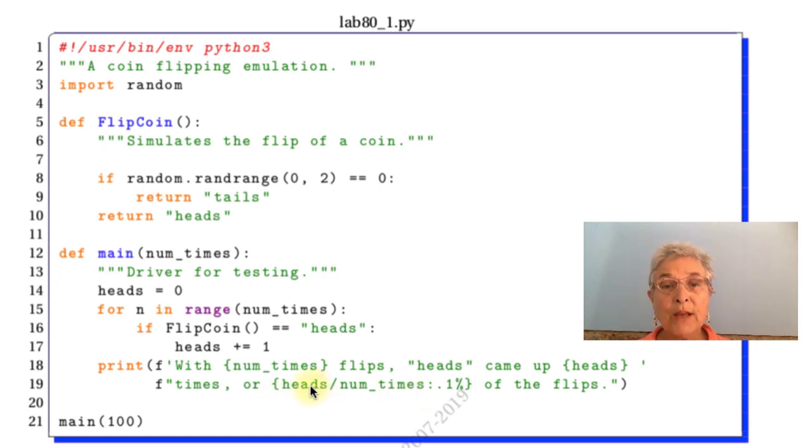Or, now here I'm dividing heads by number of times, and I'm formatting it one place to the right of the decimal after I multiply it up by 100. And then we add a percent. All that happens with that percent. There it is. Very nice.